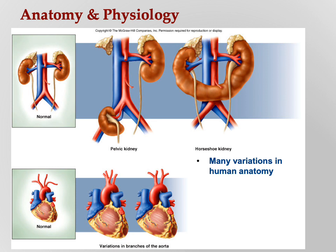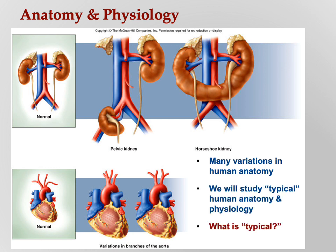People with these variations normally function perfectly well, so we're studying mostly the typical arrangement. Variations you'll mostly get in a later class. On the bottom you see the normal arrangement of arteries coming off the aorta, and on the bottom right you can see variations. When doing an operation, surgeons may realize somebody's anatomy is a little different. By 'typical,' I mean statistically — what does most of the population have? We'll look at a few abnormalities, but most of those we save for pathophysiology.